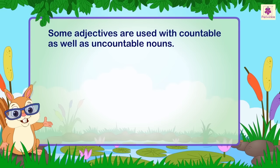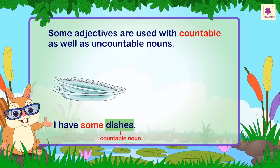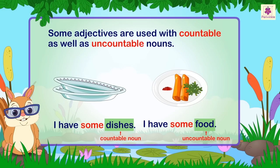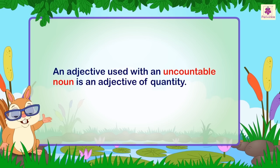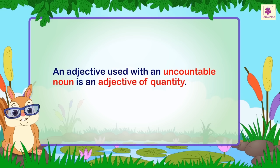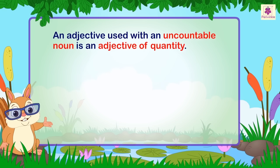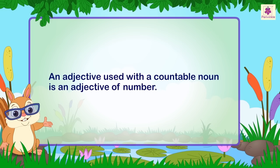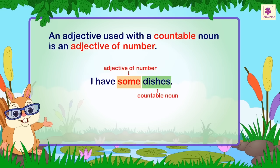Some adjectives are used with countable as well as uncountable nouns. Remember the following rules: an adjective used with an uncountable noun is an adjective of quantity — for example, 'I have some food.' An adjective used with a countable noun is an adjective of number — for example, 'I have some dishes.'